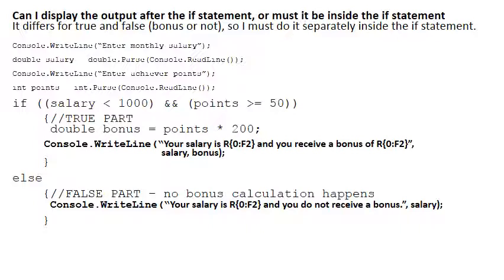When there is a bonus, the typical output would be 'your salary is so much and you receive a bonus of so much.' Notice the placeholders and the formatting to two decimal places. When there's no bonus, you simply say 'your salary is so much and you do not receive a bonus.' So we cannot put one writeline statement after the if statement because the structure of the two writeline statements differ.